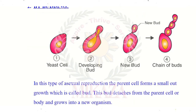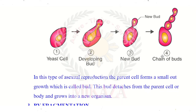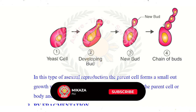After that, we have budding. Unlike fission, the daughter cells are not the same size as the parent cell — they are different sizes. For example, like ginger, the new bud that forms is smaller compared to the parent cell. When the new cell is smaller compared to the parent cell, the process is called budding.